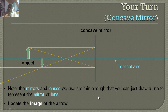Here's the solution. The first line to draw is parallel to the optical axis, bouncing off the mirror and through the focal point. The second line starts from the tip through the focal point, bouncing parallel to the optical axis off the mirror.